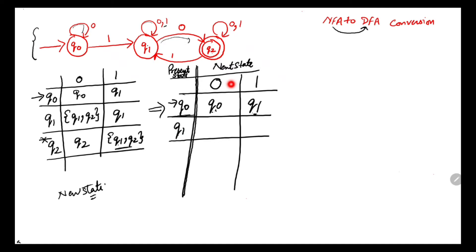What will be the transitions for q1? q1 with 0, looking at the diagram or the table, comes out to be {q1, q2}, and q1 with 1 is q1. We again check the next state column: if a new state appears we write transitions for it; if not, we stop and declare it a deterministic finite automata. Regarding whether the given automata is NFA or DFA: if any cell in the transition table contains a set of states, it is an NFA.